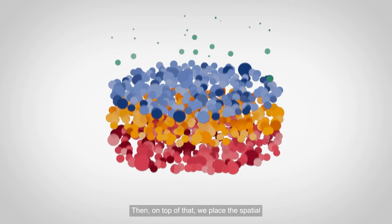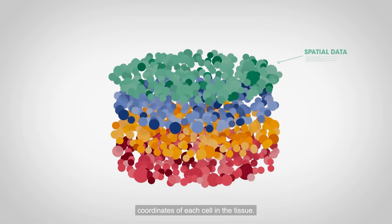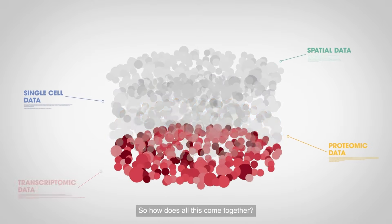Then, on top of that, we place the spatial coordinates of each cell in the tissue. So, how does all this come together?